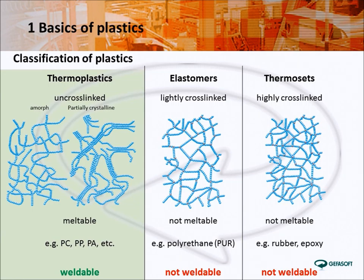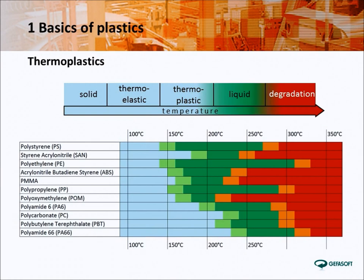The lightly and highly cross-linked elastomers and thermosets can generally not be welded. Another requirement for the weldability of a combination of materials is that the range of temperature in which the materials are melted are overlapping. Metaphorically speaking, we would burn one material before the other material is getting melted, and therefore a welding would not be possible. A combination of the same thermoplastics is basically weldable, as can also be noticed in the following slide.